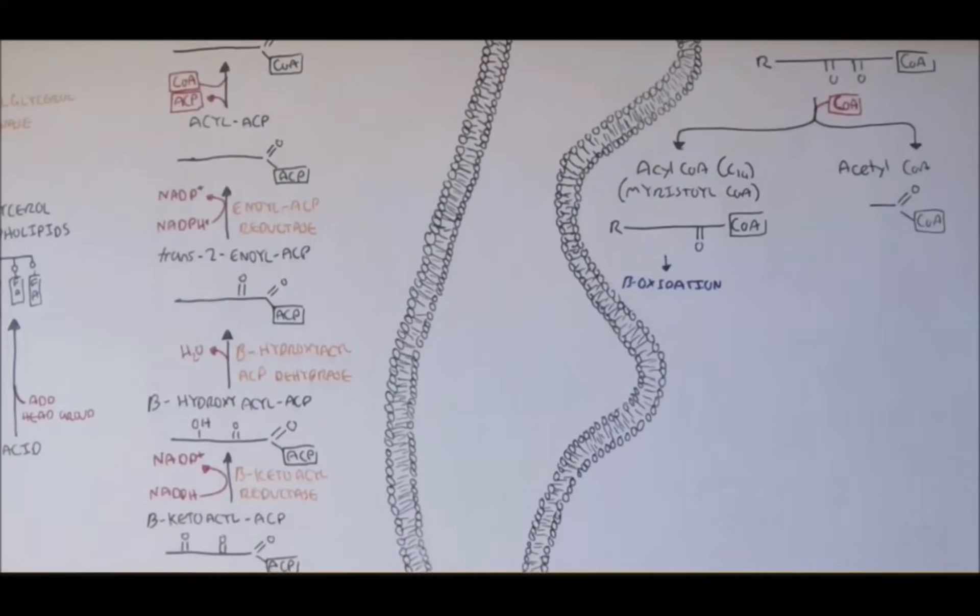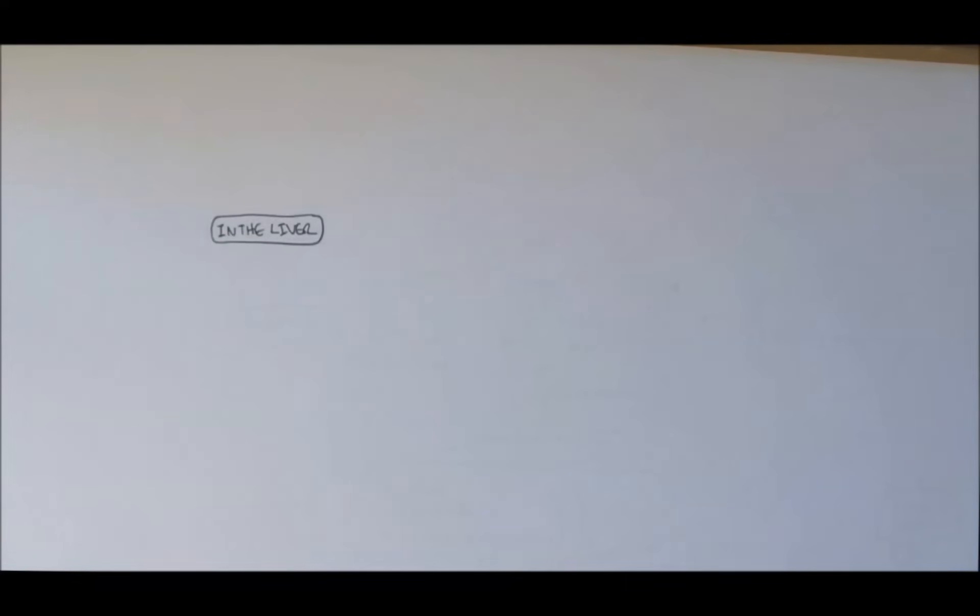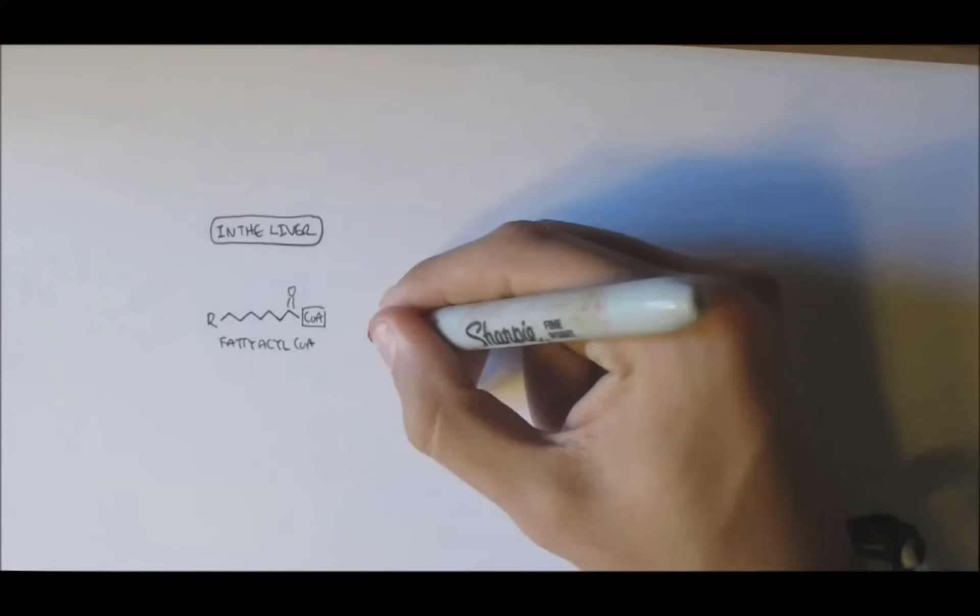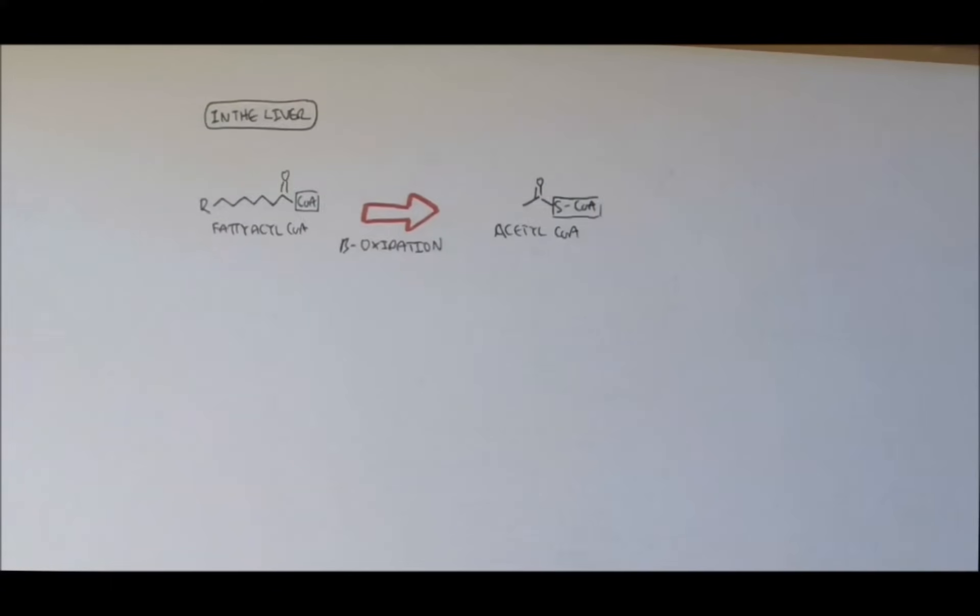Now in this video, we will look at how ketone bodies are produced. From the last video, let us pretend we are in the liver. Palmitoy CoA, a long fatty acid with 16 carbons, through beta-oxidation yielded 8 acetyl-CoAs.